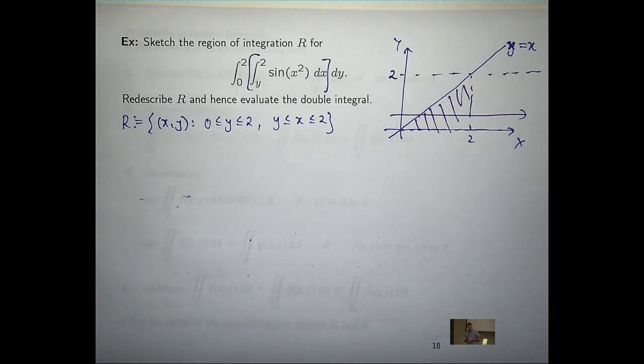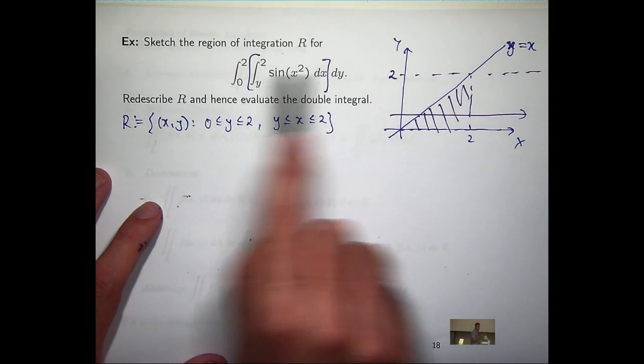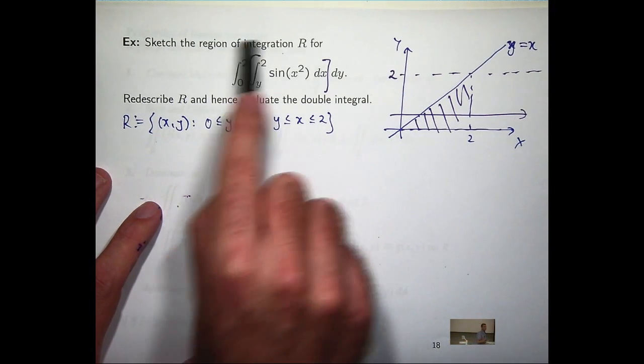So the strategy here is to look at what you've got. I can't do it. Let's see if I can flip or reverse the order of integration and see what happens. But I can't just flip those. I've got to re-describe my region.